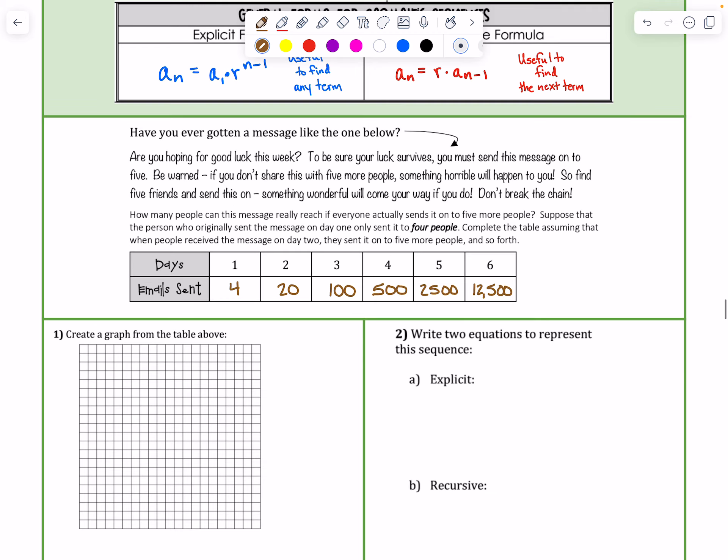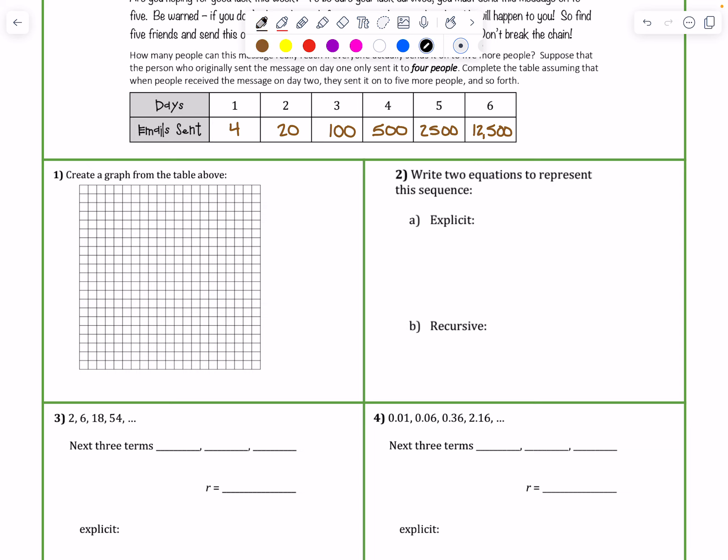We're going to create a graph of this, but we're not going to use every one of those points since the numbers get really big. We're just going to plot the first 4 days. So let's set up our graph. Let's say our independent value, which is like the x-axis, is days. And the y-axis is our dependent value, which are emails sent. Then let's make every other box worth one day. So let's just say 1, 2, 3, 4.